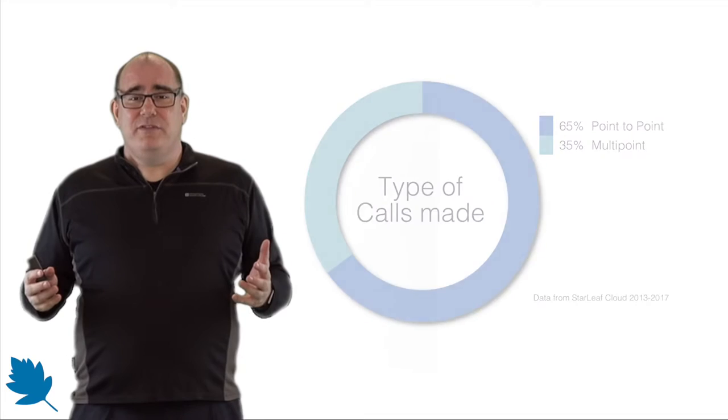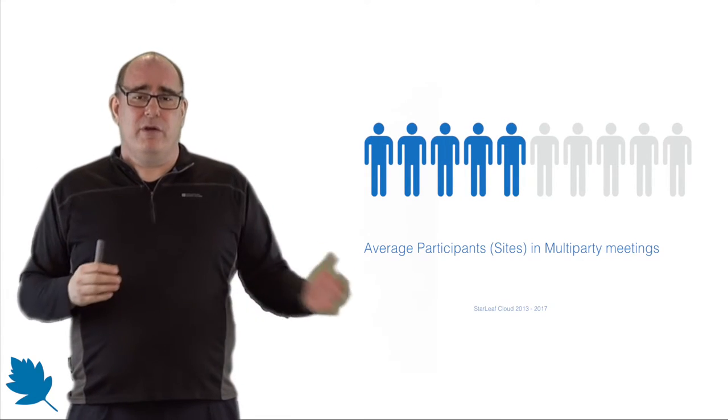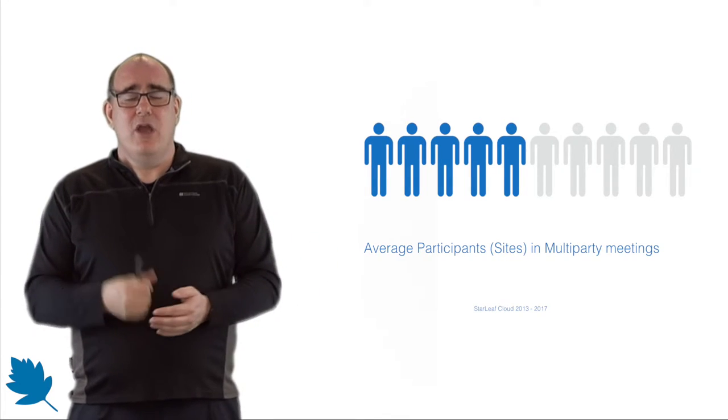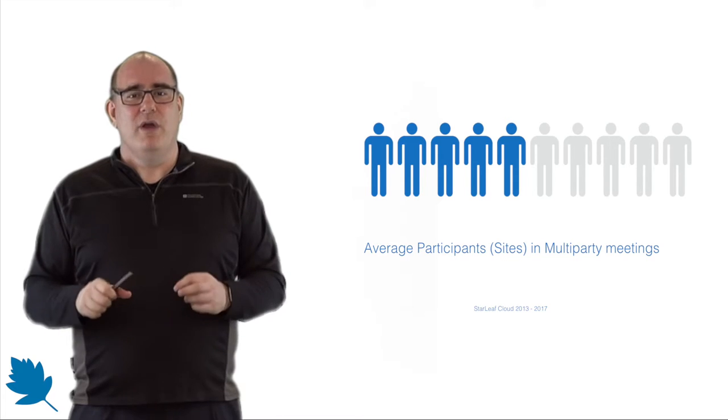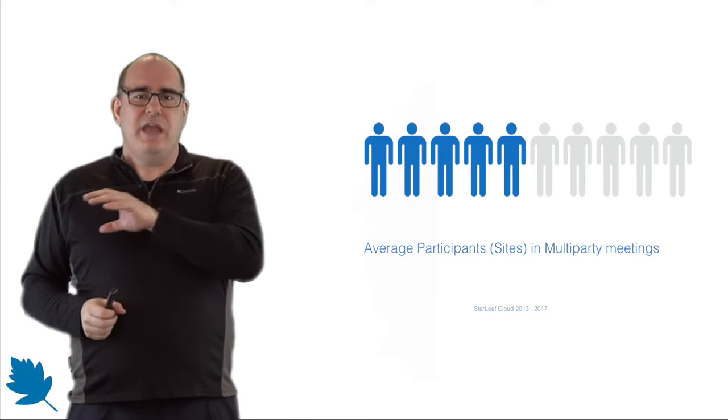Another thing we find from the data is the average size of a multi-party meeting is only five participants — five sites. Sure, there are some big calls and a lot of small calls, but when we average it out across all those millions of minutes every week, the average is five sites. So if you're looking at a multi-party meeting service and they're wowing you with numbers like 100-way calling or 50-way calling, think about the average — think about what your organization is actually going to use. You might find you're paying for something you don't use.